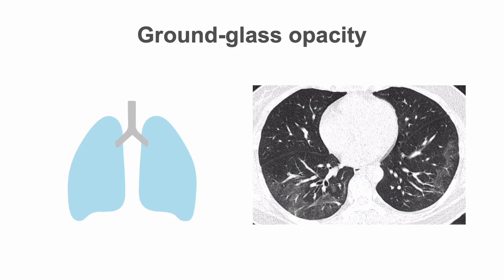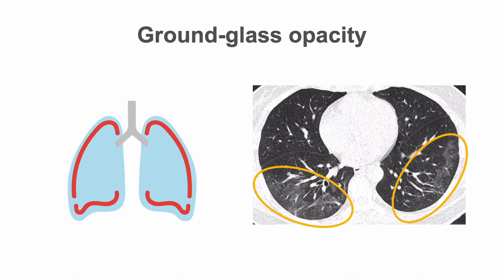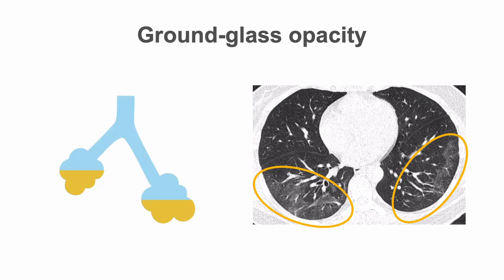The predominant CT abnormalities in COVID-19 are bilateral, peripheral, and basal predominant ground glass opacities. Ground glass opacity is a non-specific CT finding associated with a hazy opacity that does not obscure the underlying pulmonary vessels or bronchial structures. Its presence suggests a partial filling of the air spaces in the lungs by inflammatory exudates.